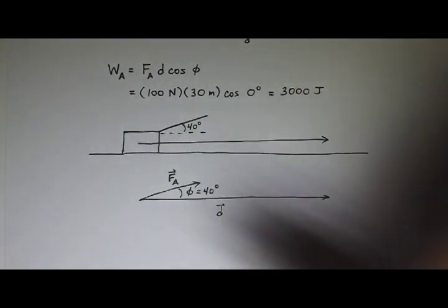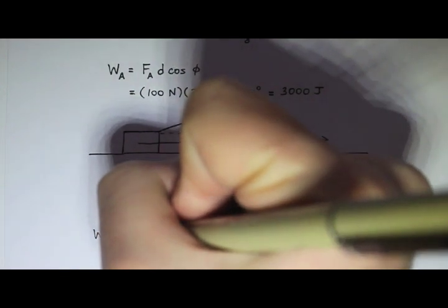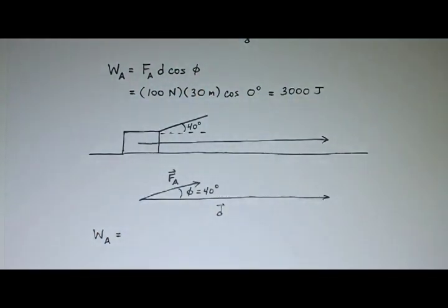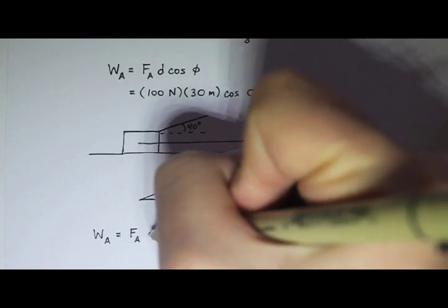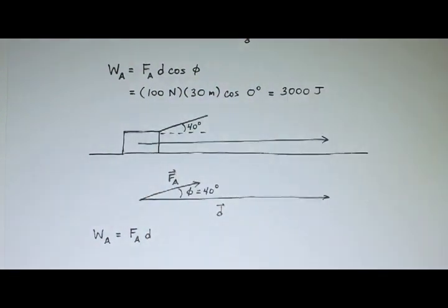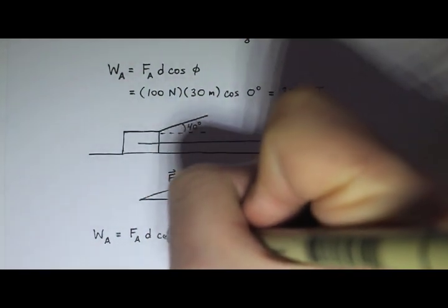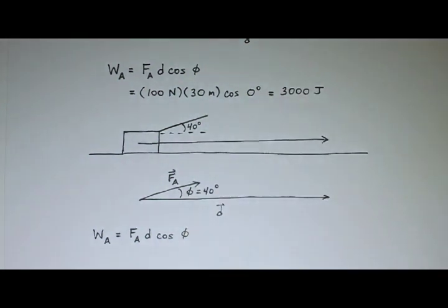Okay, so the work done by the applied force is the applied force, magnitude of the applied force, times the magnitude of the displacement, times the cosine of the angle between the applied force and the displacement when they're placed so that their tails coincide. Okay, let's plug in.